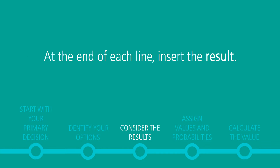Next, at the end of each line, insert the result. If the result of choosing that option is uncertain, draw a small circle. If the result requires you to make a decision, draw a small square. Repeat this process from each decision square until you've drawn lines representing all of the possible outcomes you've identified.